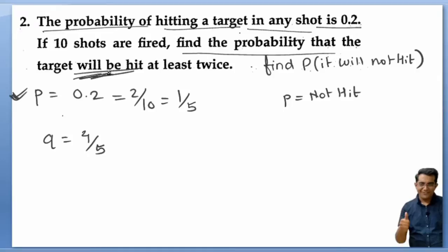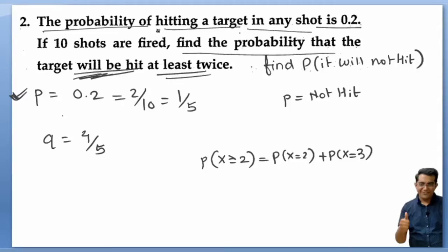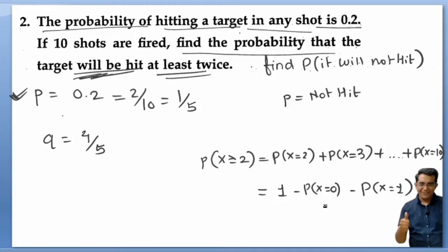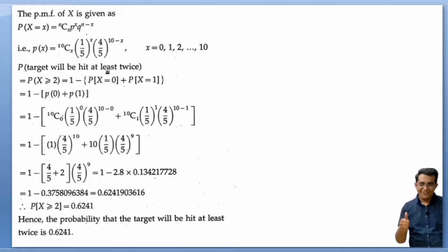Find the probability that the target will be hit at least twice. At least twice means 2 or more times. The number of shots is 10, so N = 10. To avoid lengthy computation from P(X=2) to P(X=10), we write: P(X ≥ 2) = 1 − P(X=0) − P(X=1). Applying the formula and substituting values gives the final answer.